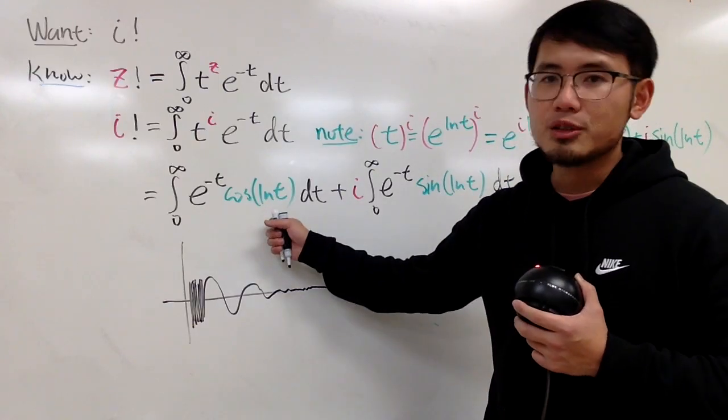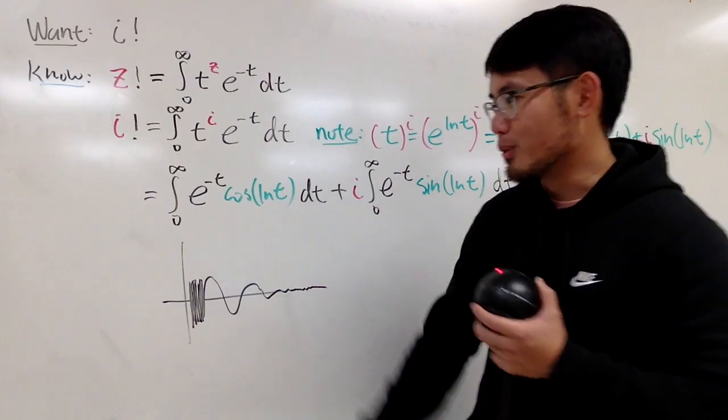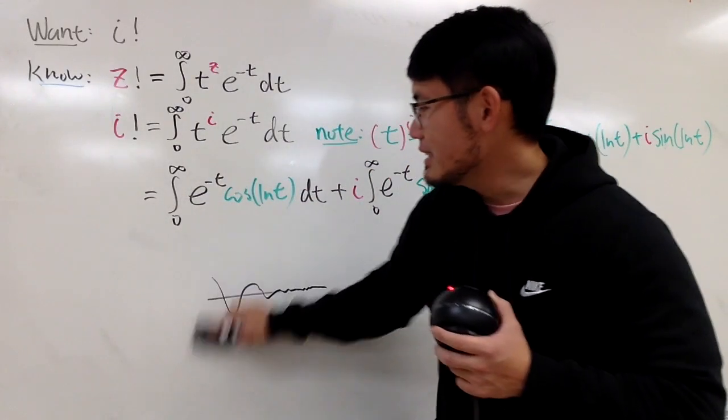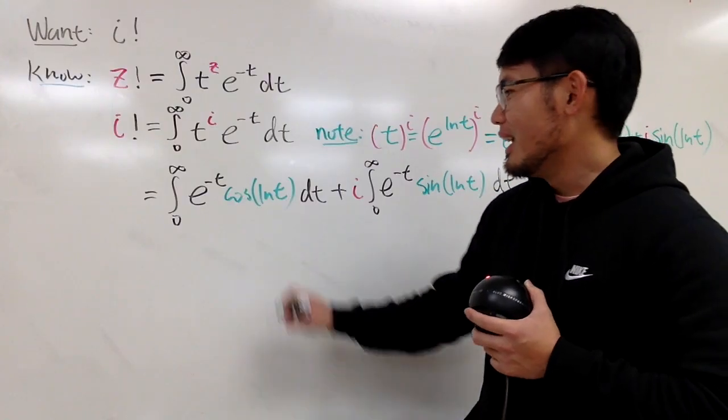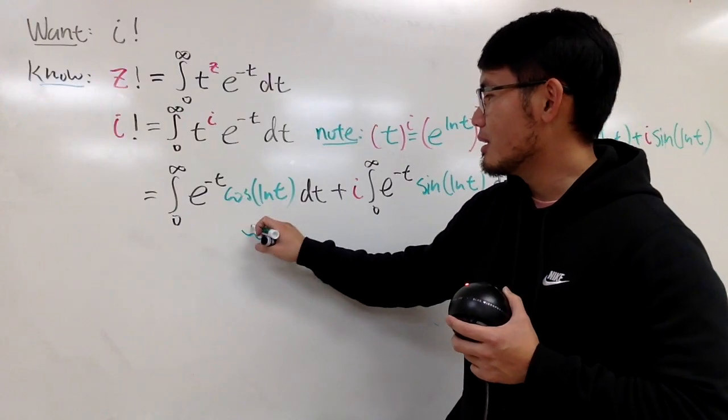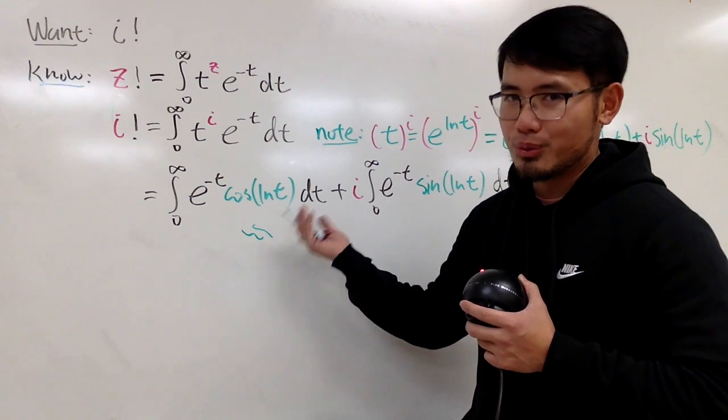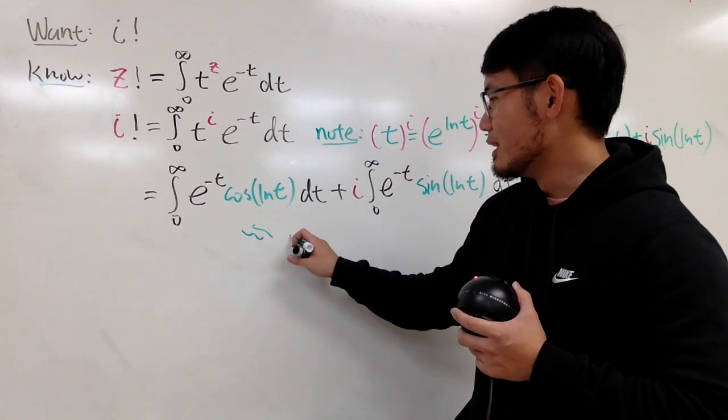So, the point is that this right here will give us a finite value. And, with that being said, you can just use, yes, Simpson's rule, and you can just maybe use a proper integral to approximate this.